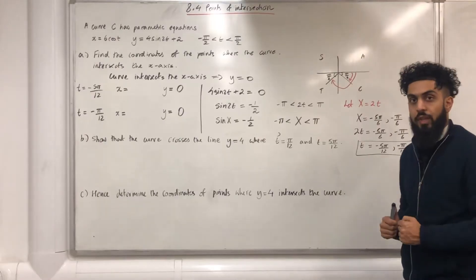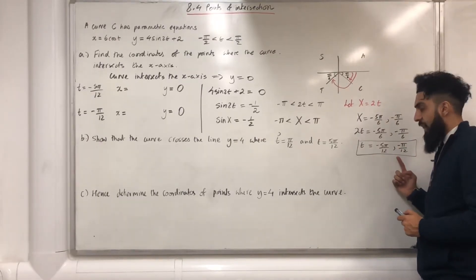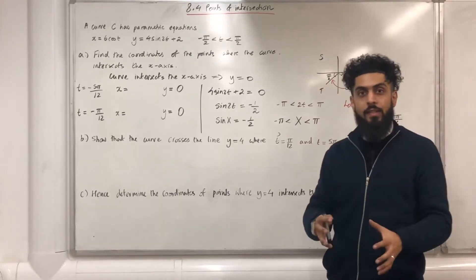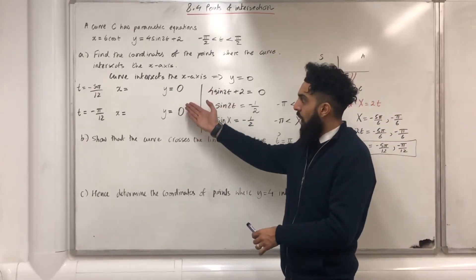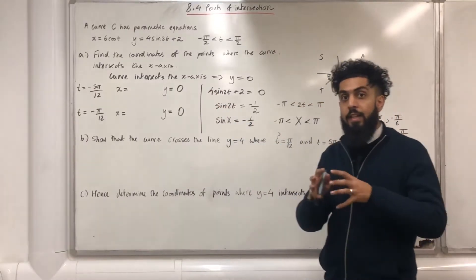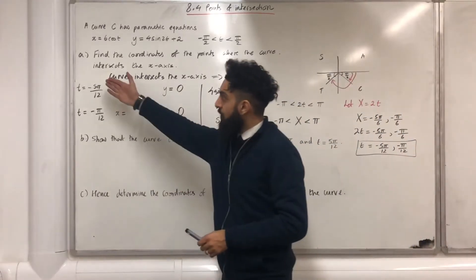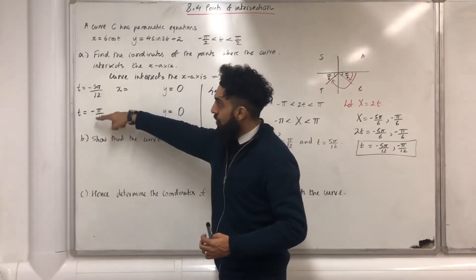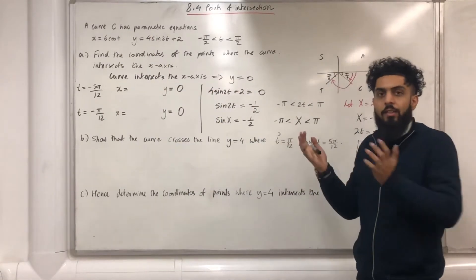After solving the trigonometric equation, I end up with t equals minus 5 pi over 12, t equals minus pi over 12. We know that at an x-intercept, the y-coordinate is 0. All I need to do is work out the x-values corresponding to these two t-values. The method is to substitute these two t-values into the x-equation to work out the x-coordinates.